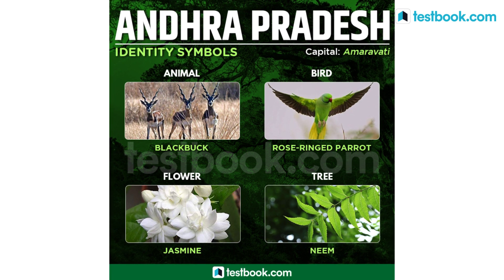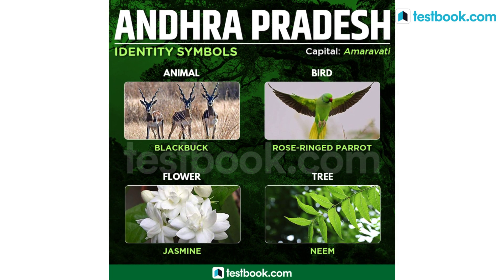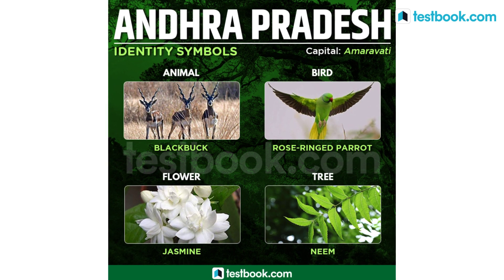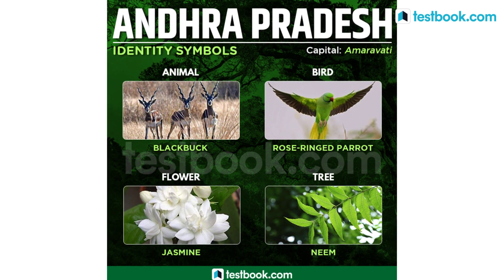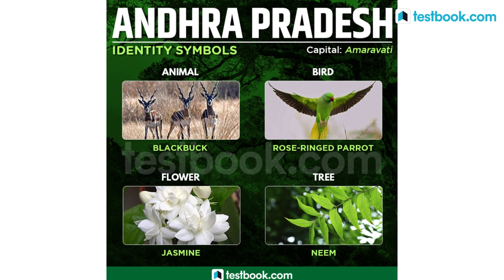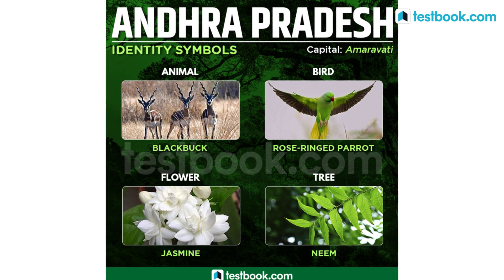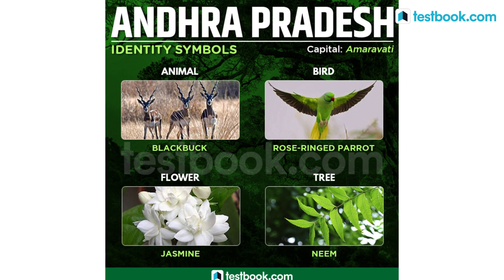Next up is Andhra Pradesh. Andhra Pradesh state animal is Black Buck, state bird is Rose-ringed Parakeet, state flower is Jasmine and state tree is Neem.